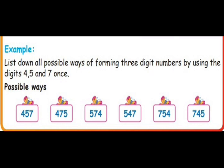Next example: list down all possible ways of forming three-digit numbers using the digits 4, 5, and 7. Keeping 4 as the first digit: 4 5 7, and interchanging five and seven — 4 7 5. Keeping 5 as the first digit: 5 4 7, or interchanging four and seven — 5 7 4. Keeping 7 as the first digit: 7 4 5 or 7 5 4.